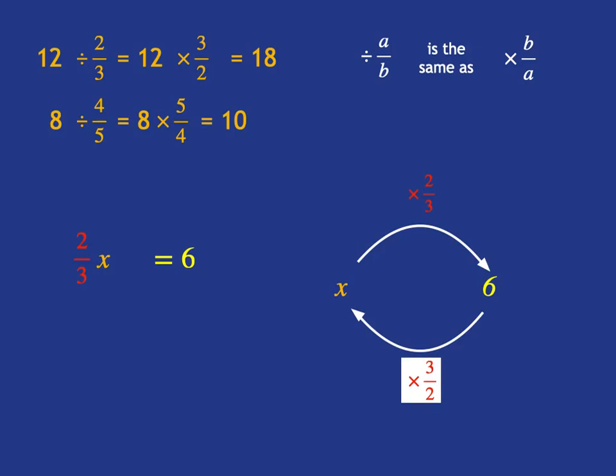So, when we're faced with solving an equation like 2 over 3x is equal to 6, the way we get back to just a plain x is to multiply by 3 over 2.